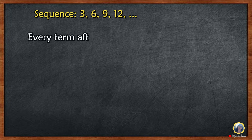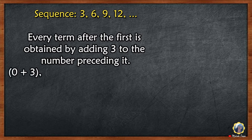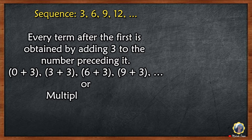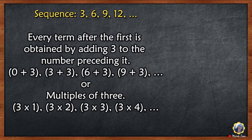Example: sequence 3, 6, 9, 12, and so on. Every term after the first is obtained by adding 3 to the number preceding it. 0 plus 3 is 3, 3 plus 3 is 6, 6 plus 3 is 9, 9 plus 3 is 12.